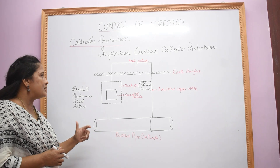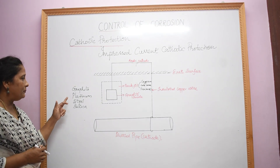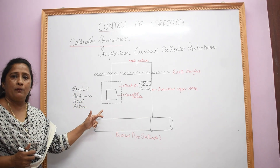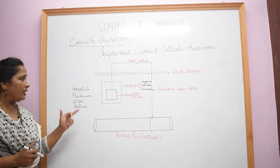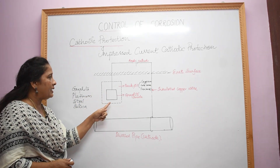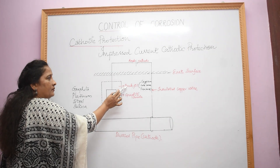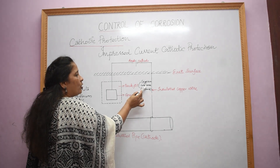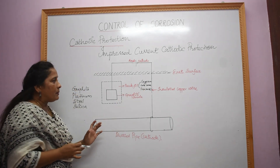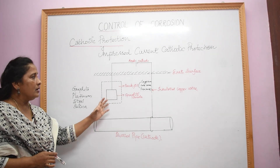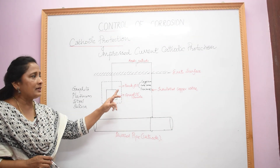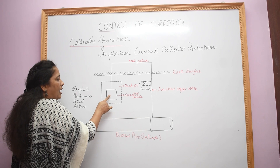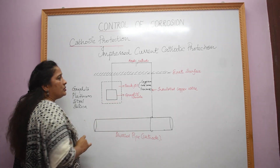Materials such as graphite, platinum, steel, and silica are normally used as anodes in this type of protection method. The anodic metal is kept inside a bag called the backfill. This backfill consists of materials like gypsum, coke breeze, or bentonite. The purpose of the backfill is to increase the electrical contact with the soil and also to prevent direct contact of the anodic metal with the soil.